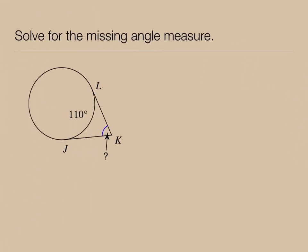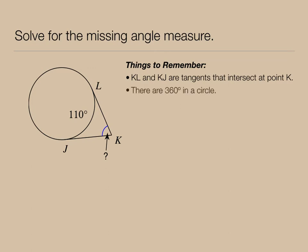Now we're going to change it up a little bit and solve a different style problem. In this diagram, we can see that KL and KJ are tangents, and these tangents intersect at point K, which is outside of the circle. What we want is the measure of angle LKJ. We know there's 360 degrees in a circle, and we're given that minor arc JL measures 110 degrees.